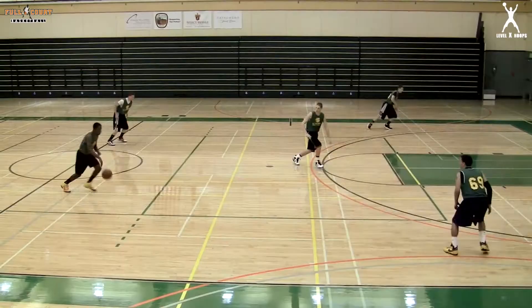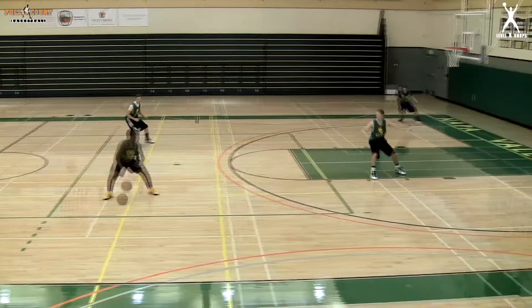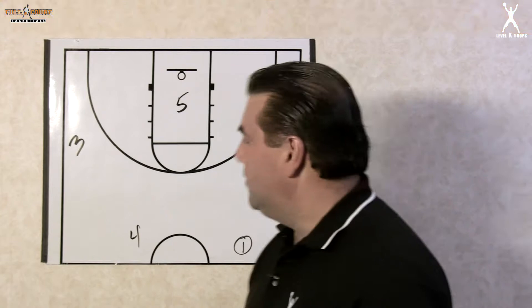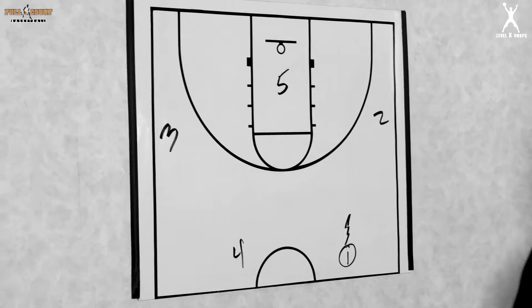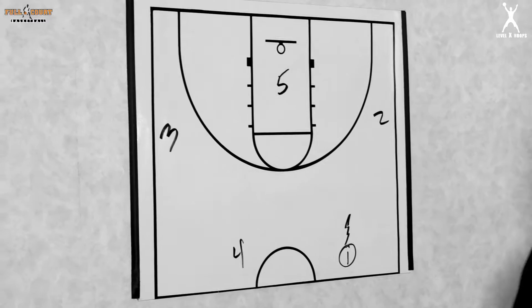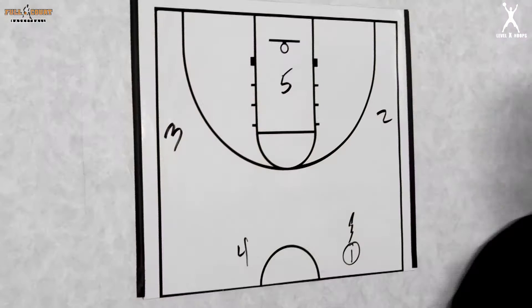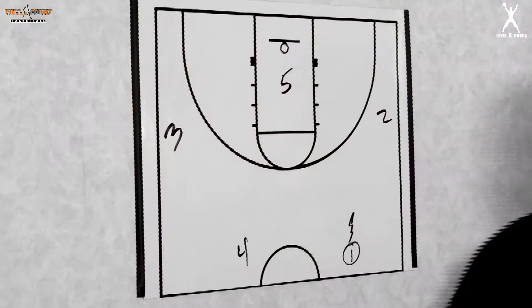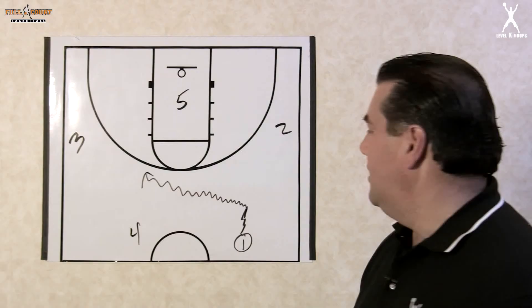Let's take a look at another option for getting into the Princeton series continuity offense as we bring the ball up the floor. The players are in similar spots as previously mentioned. Number one has the option of reading the defense — perhaps the defense has really come over to ball side. At any time, he can look to cross the ball over and attack the other side of the floor with free throw line extended.